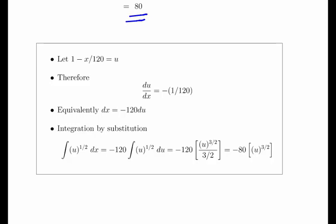We're going to use u substitution. Let u = 1 - x/120, therefore du/dx = -1/120. We arrange that and get dx = -120 du. When we carry out our u substitution, we change dx into -120 du.